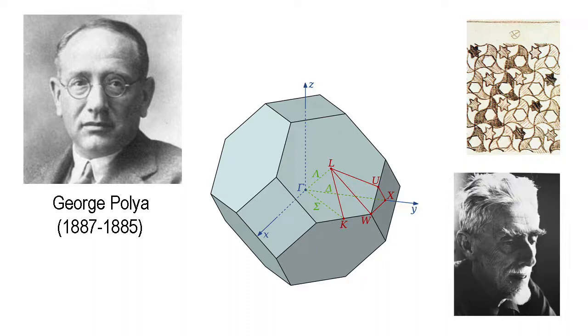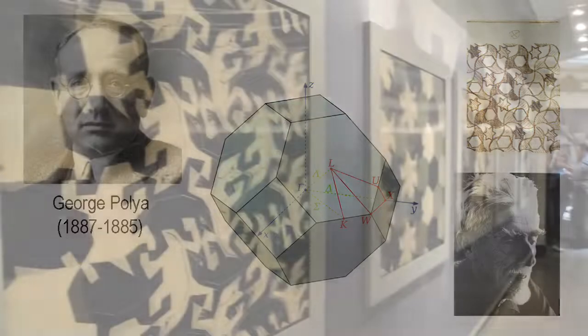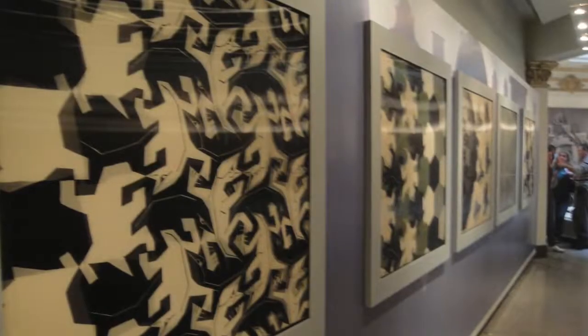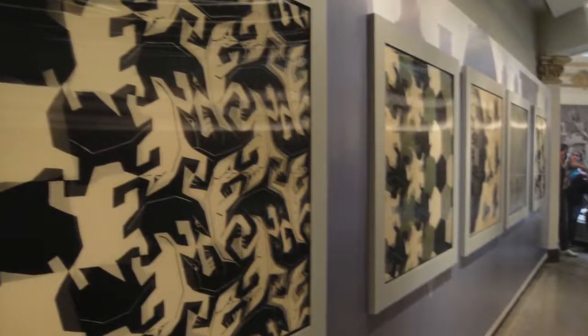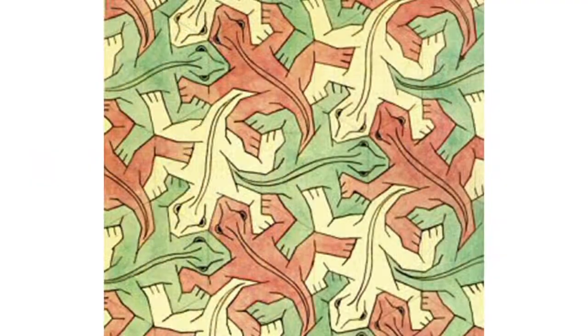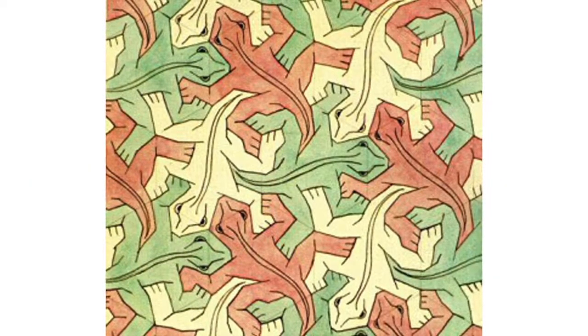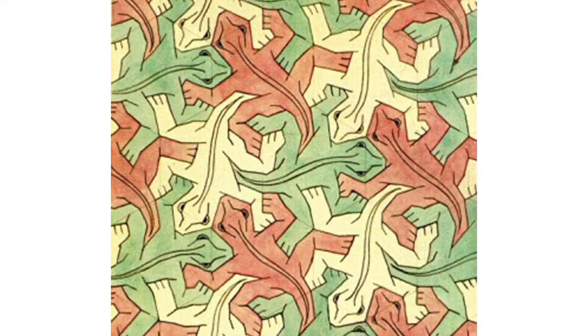Escher familiarized himself with the 17 wallpaper groups and started to create periodic tilings of his own using geometric grids. In place of polygonal elements, he experimented with complex interlocking shapes in the forms of birds, fish, reptiles, and a particularly ingenious combination of angels and devils. One of his earliest works based on tessellation and a hexagonal grid was Study of Regular Division of the Plane with Reptiles, 1939, rendered in pencil, ink and watercolour.